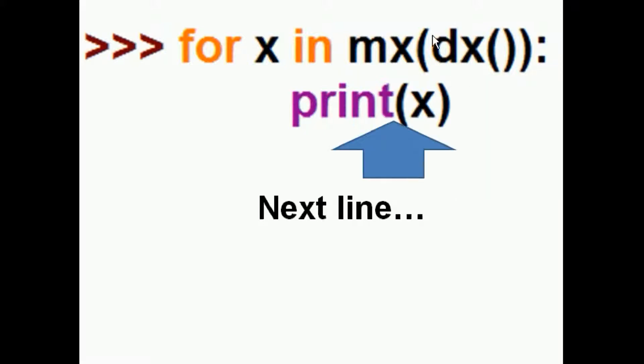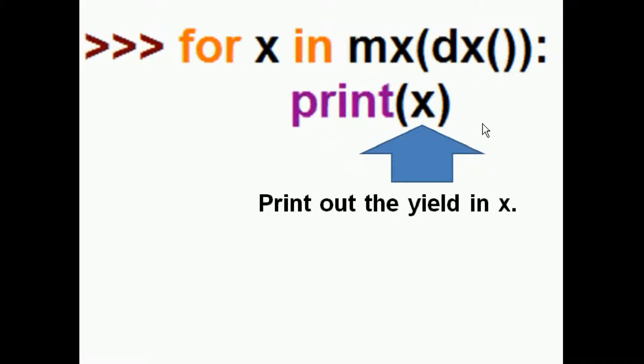So it goes back to the function called the MX. Here's the previous call. And then it goes down to the next line and prints out the yield, which is that string that is now an X. So it passed it back to this X. And June week one gets printed out.